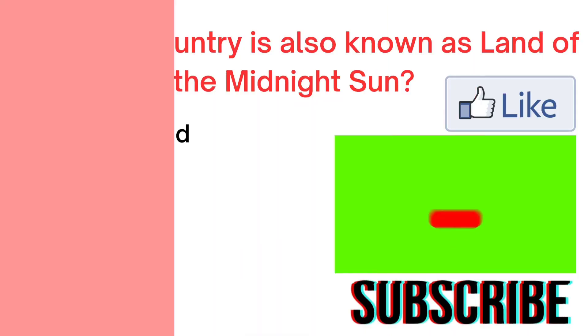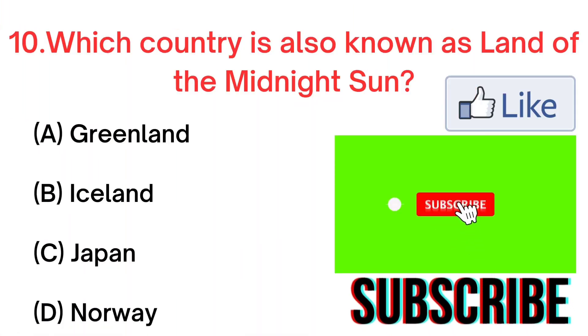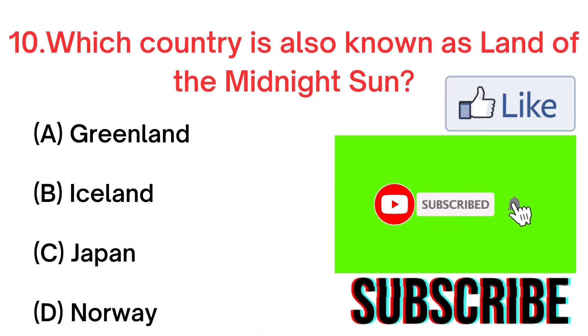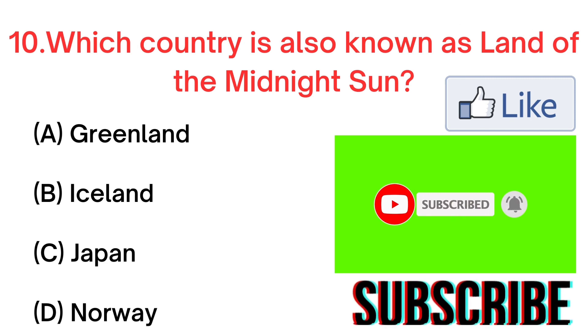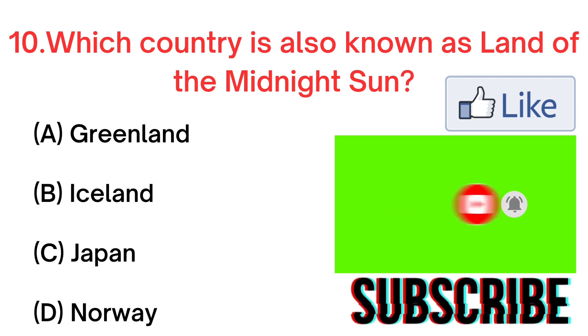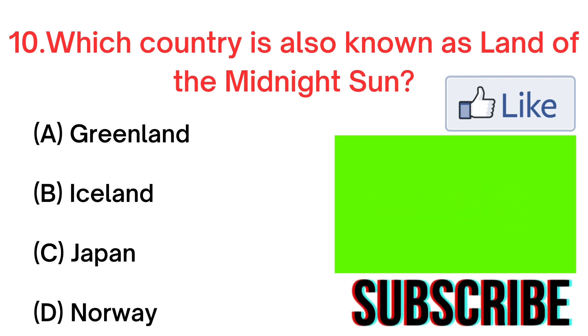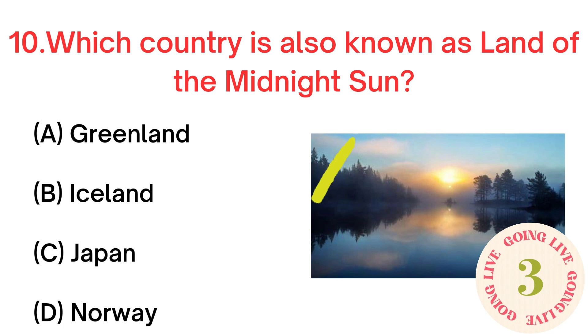Your next question. Which country is also known as Land of the Midnight Sun? A. Greenland. B. Iceland. C. Japan. D. Norway.